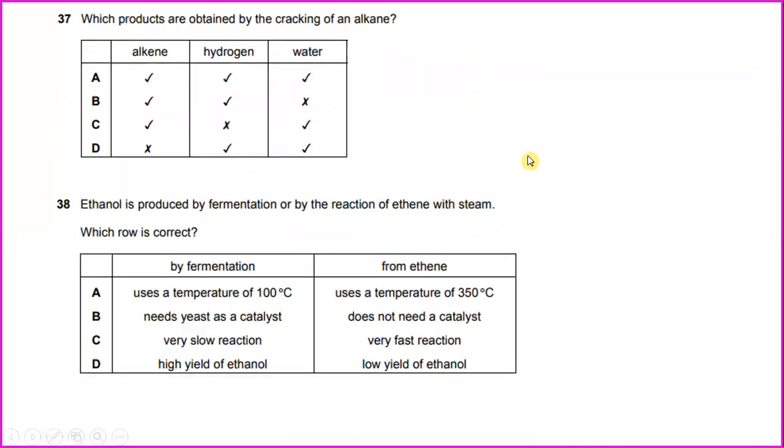Which products are obtained by the cracking of alkane? It will produce alkene and hydrogen. Cracking of alkane can produce pure carbon, pure hydrogen, and other types of hydrocarbon as well as alkene. So the answer will be B.